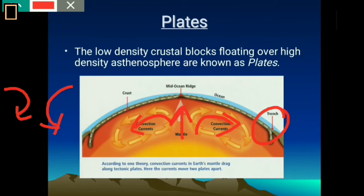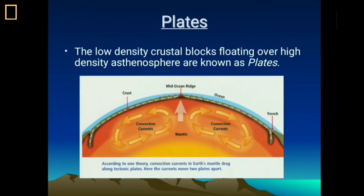There are two types of movement of convectional currents. In the asthenosphere the temperature averages 700 to 1700 degrees centigrade. One movement is in opposite directions, shown in the central part of the diagram, and the other is towards each other. In the case of towards-movement, the overlying crustal blocks collide with each other, forming trenches, as you can see in the diagram.